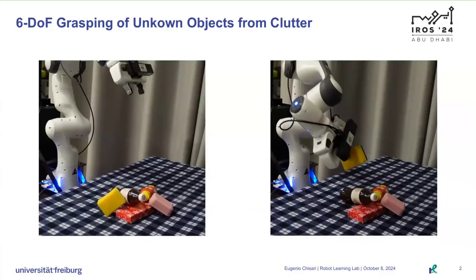In this work we focus on the task of Six Degrees of Freedom Grasping of Unknown Objects, where the goal is to grasp a specific unknown object from clutter from camera observation. This is a high dimensional optimization problem as many different grasp candidates exist for a given object with varying contact conditions and robot joint configurations.